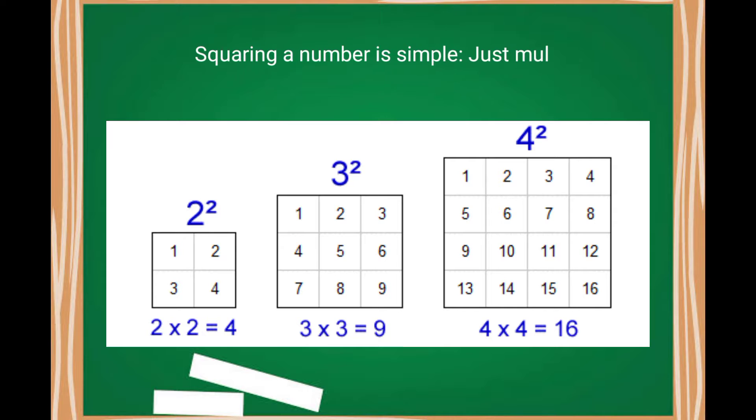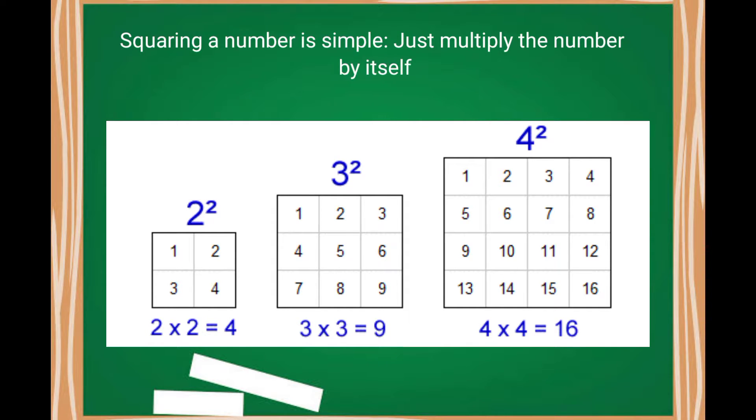To make it more clear, I will give you more examples. Look at the squares below. 2 square means 2 times 2. From the picture, now it is crystal clear, right? Now look at the second square, that is 3 square, 3 times 3, which is 9. And finally, 4 square means 4 times 4. 4 square is 16.